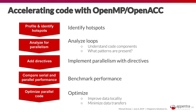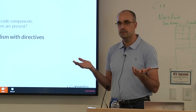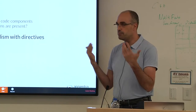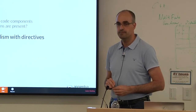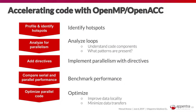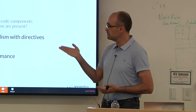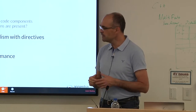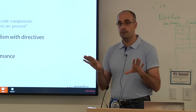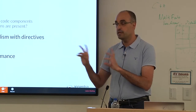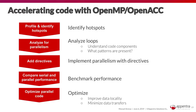Third: once you know the hot spots and have identified parallelism, decide how to implement it — adding directives using OpenMP or OpenACC. These are implementations of the parallelism you discovered in step two. Parallelware Trainer will help you produce many implementations using OpenMP and OpenACC from your single C code. Then compile, run, and measure performance. If performance is sufficient, stop. If not, optimize by improving data locality and minimizing data transfers, then re-profile. This is an iterative process.